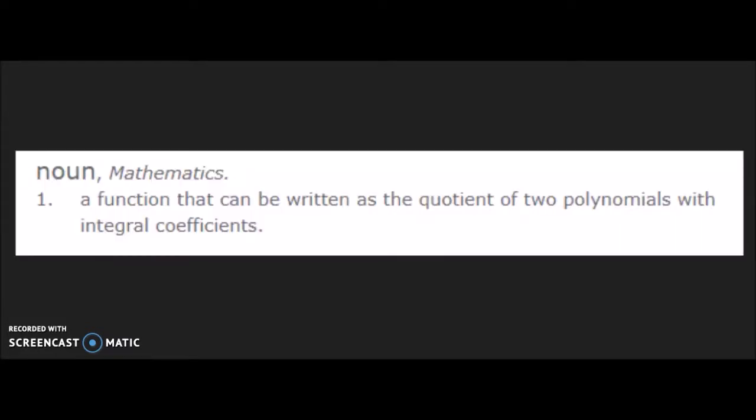First things first, a rational function is defined as a function that can be written as the quotient of two polynomials with integral coefficients. In simpler terms, any function that has a polynomial over a polynomial.